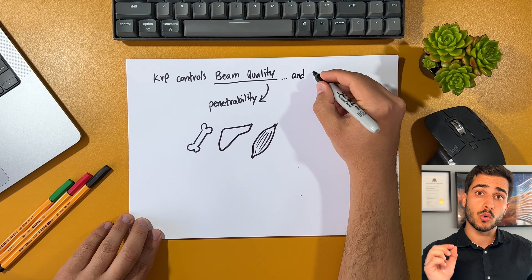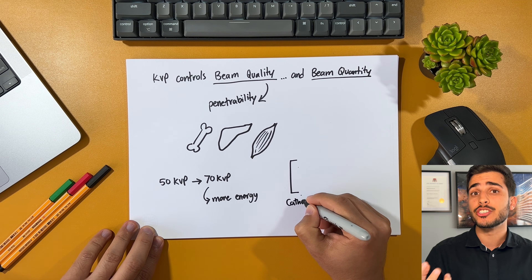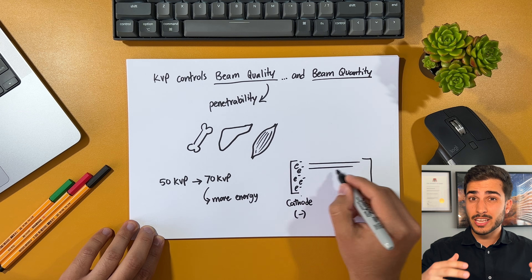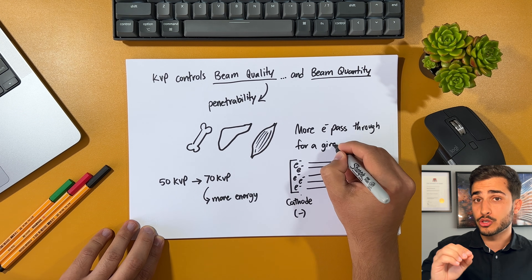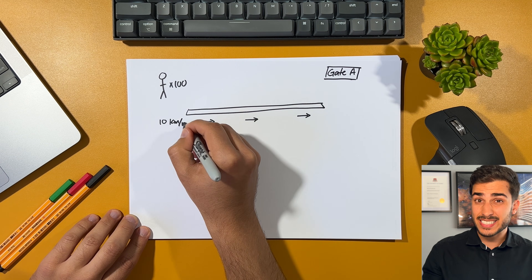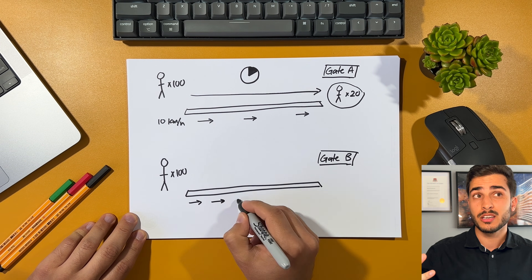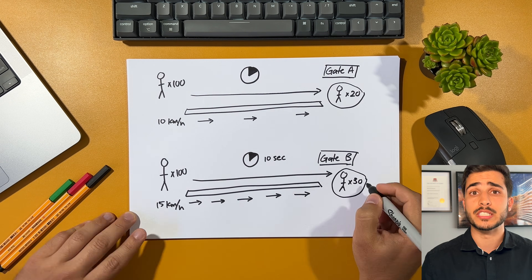Interestingly, KVP also controls the beam quantity. At first it may seem a little odd, but here's an easy way to think about it. For a given MA of 100 and about 50 milliseconds — which equates to 5 MAS — if we increase the KVP from 50 to 70, we've increased the energy of the photons. The more energy the photons have, the more electrons can move from the cathode to the anode in that set exposure of 50 milliseconds. It's like 100 people on a walkway to gate A at 10 km/h — in 10 seconds, only 20 pass the finishing line — whereas the same 100 people on a walkway to gate B at 15 km/h, 30 of them pass the same line. The more electrons passing through in a set time, which equates to how fast they're going and how much energy they have, ultimately results in higher beam quantity. That's how I like to think about it.